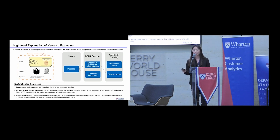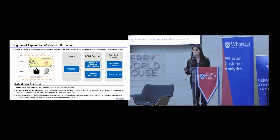First on our agenda is keyword extraction. Keyword extraction is a technique used to automatically extract the most relevant keywords and phrases from text to summarize the content in just a few major words. The specific model we used is called BERT — Bidirectional Encoder Representations from Transformers.